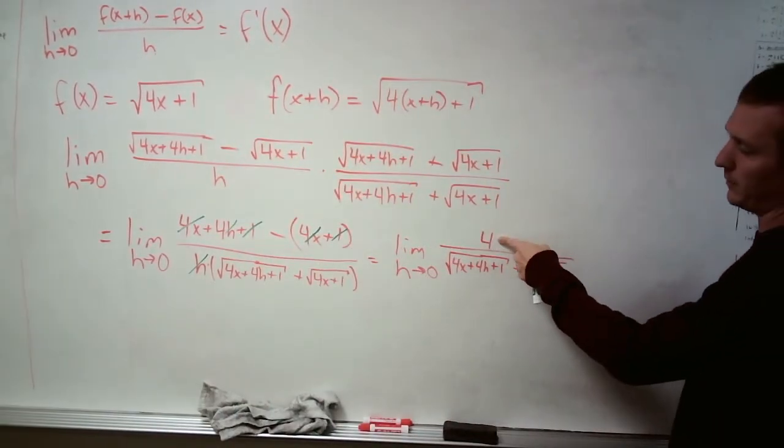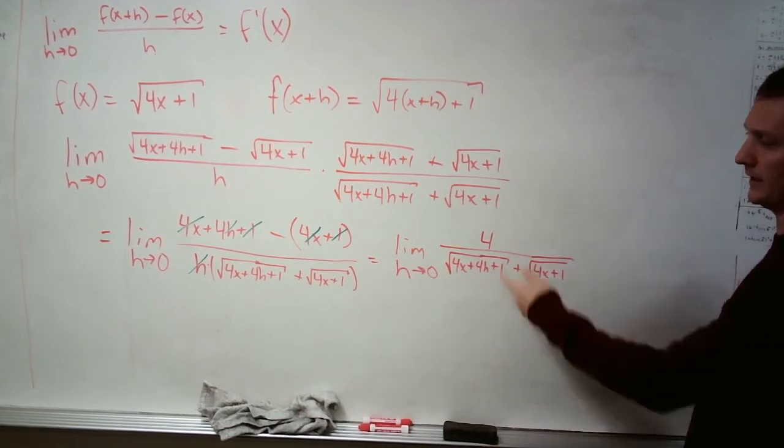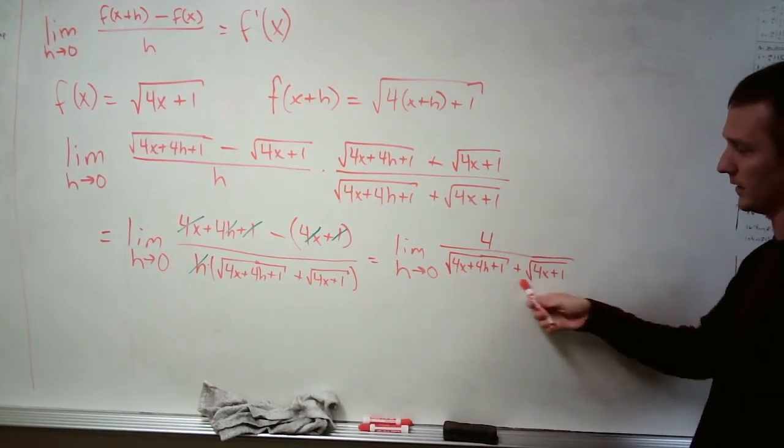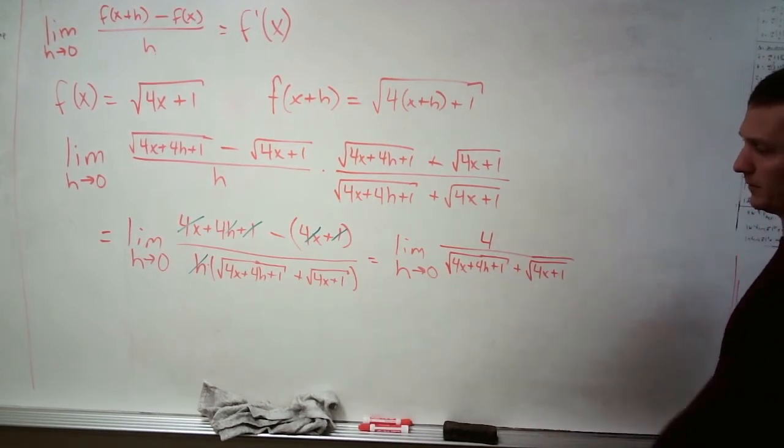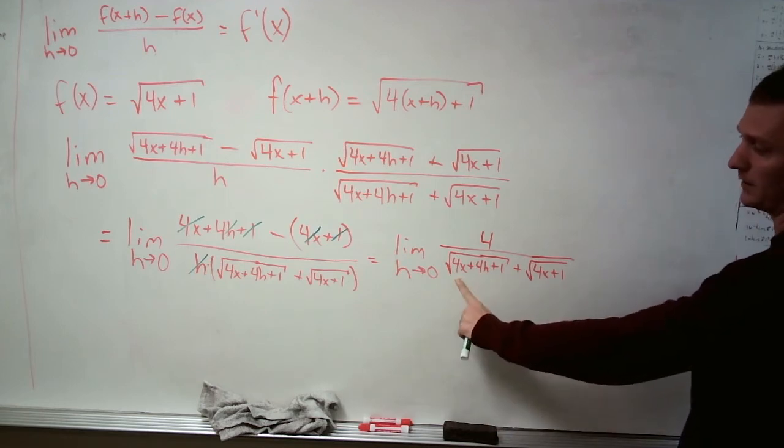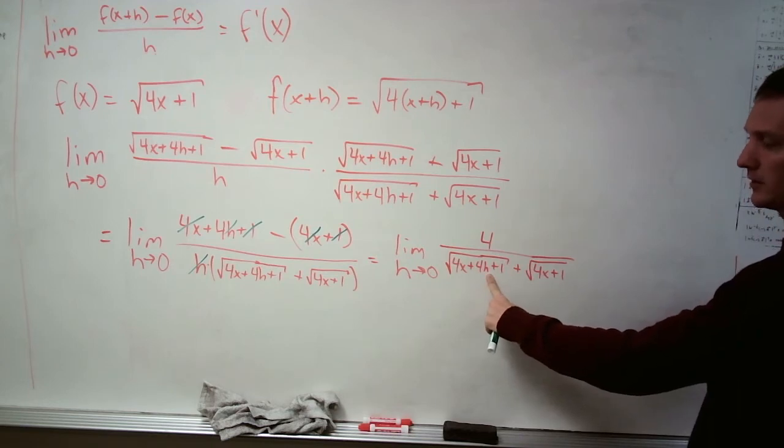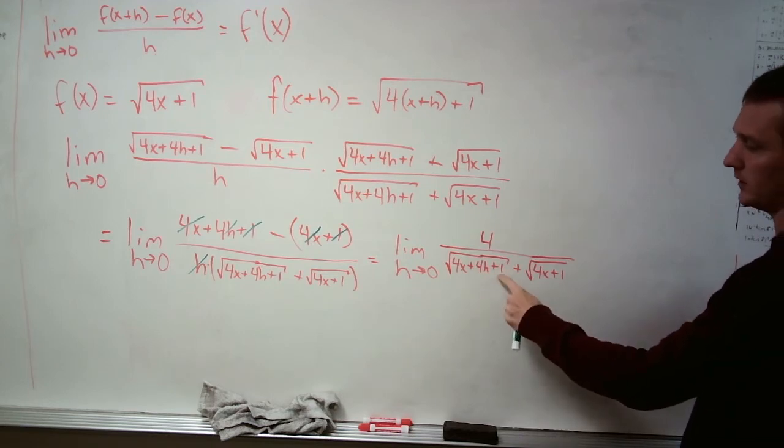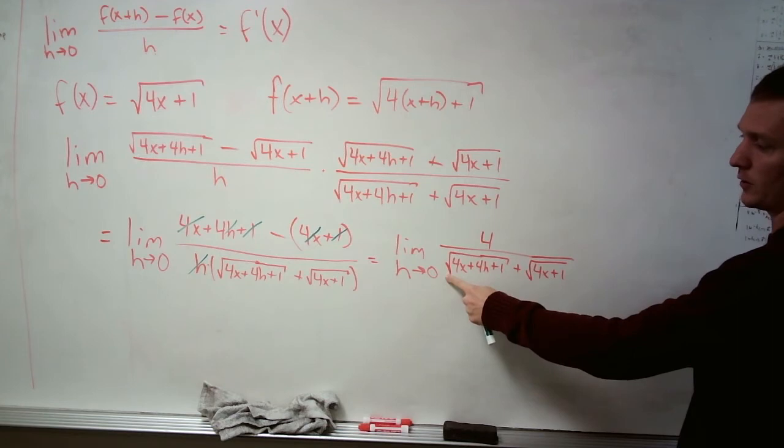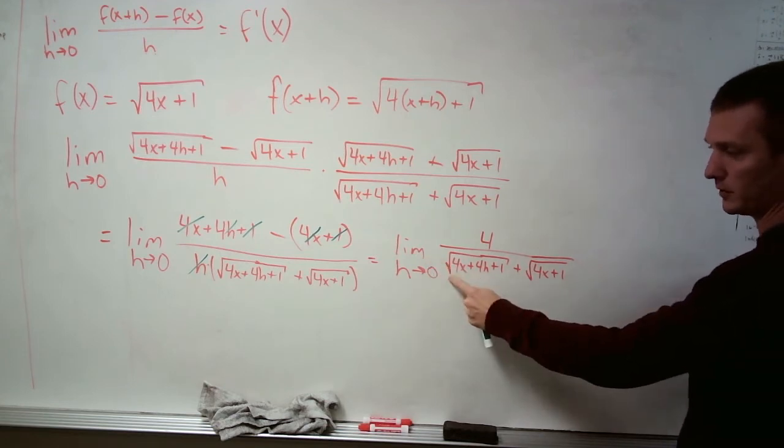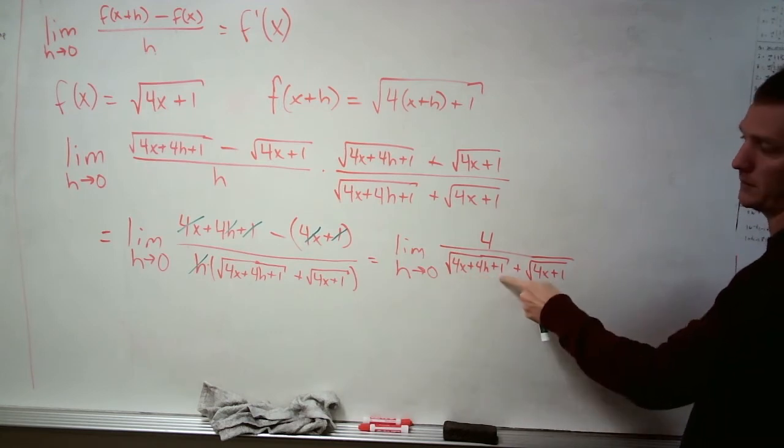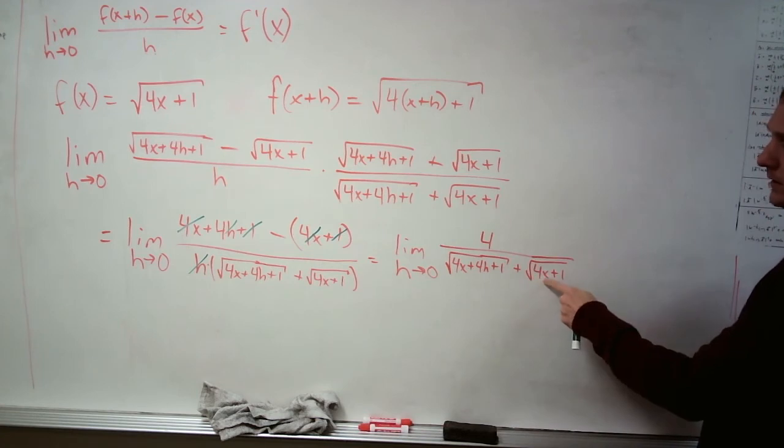I can tell you the limit of 4 as h goes to 0. It's 4. Can you tell me this limit as h goes to 0? And is it 0 itself? Well, let's see. 4x doesn't depend on h. 4h does, and that goes to 0, plus 1. 1 stays at 1. You can pass limits underneath roots. So we can take the limit of this root just like we could take the root of this limit. This has no h in it at all. So this we're fine with.